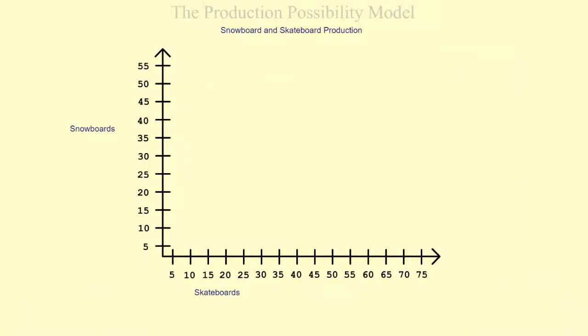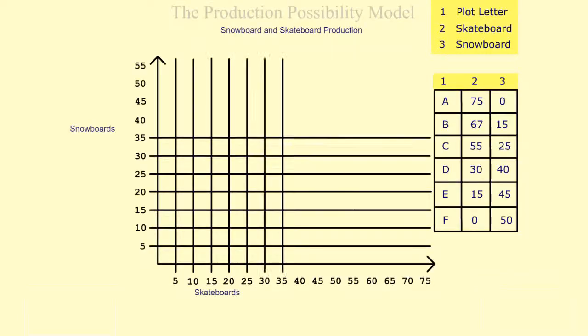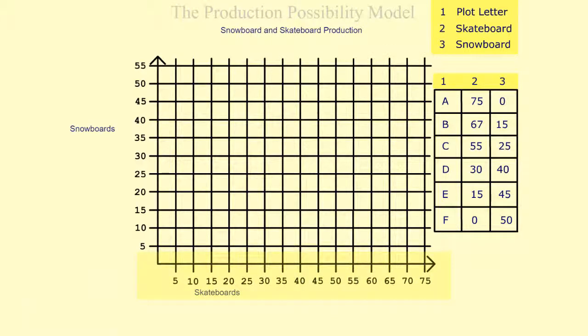Next, let's plot the combination of production possibilities for snowboards and skateboards on our graph. Acme can produce 75 skateboards, but if it produces all 75 skateboards, it cannot produce any snowboards due to limited resources. Since skateboards are on the horizontal axis, number 75, place the dot on 75. Because zero snowboards on the vertical axis were produced, we do not need to move our dot up or down. Label the dot A at 75 on the horizontal axis and zero on the vertical axis.